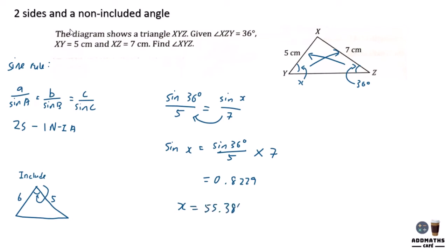55.38 degrees. You can also write in the mini form as in this form. All right, just press your calculator button to find this sine. So to change it to minutes.